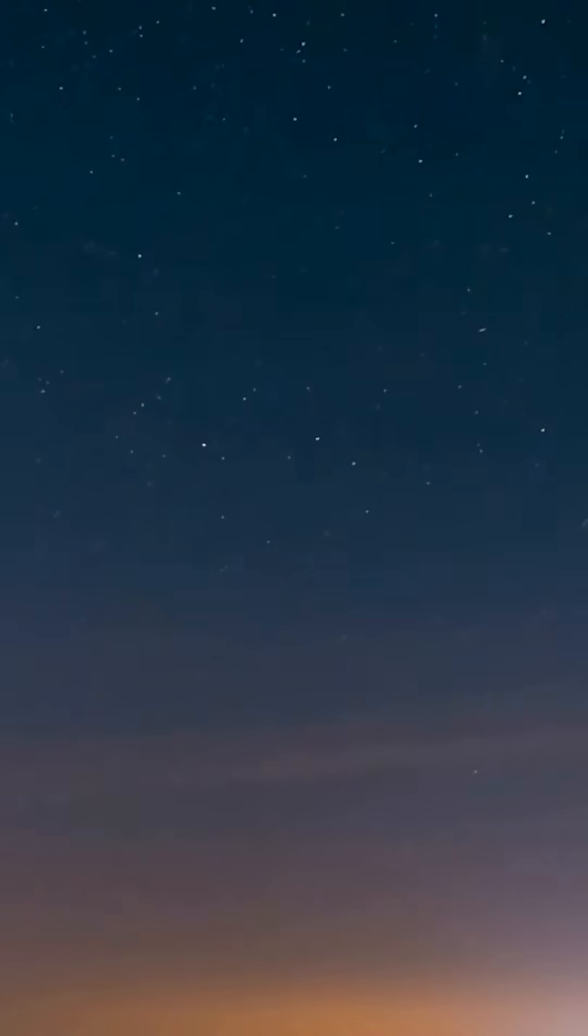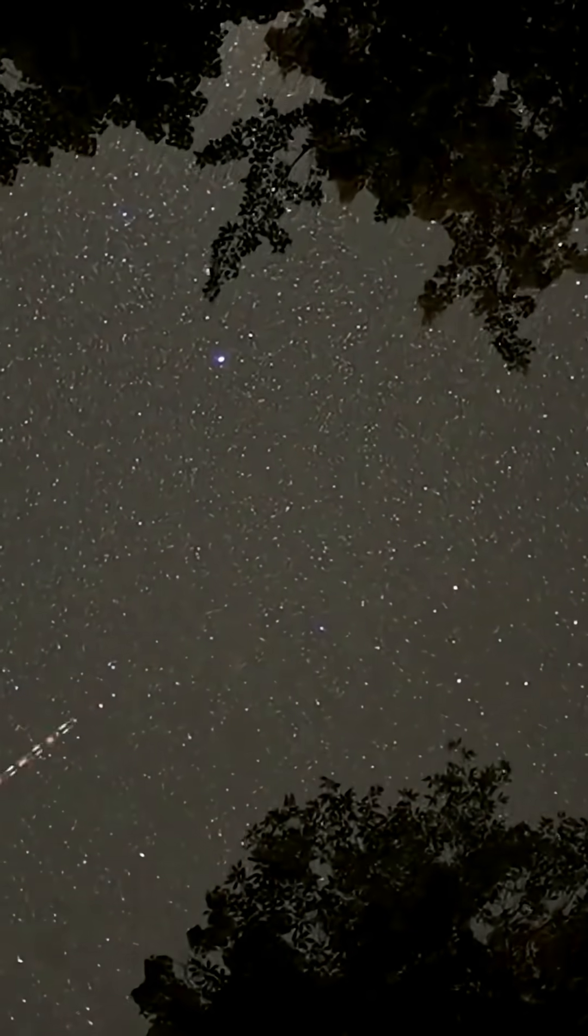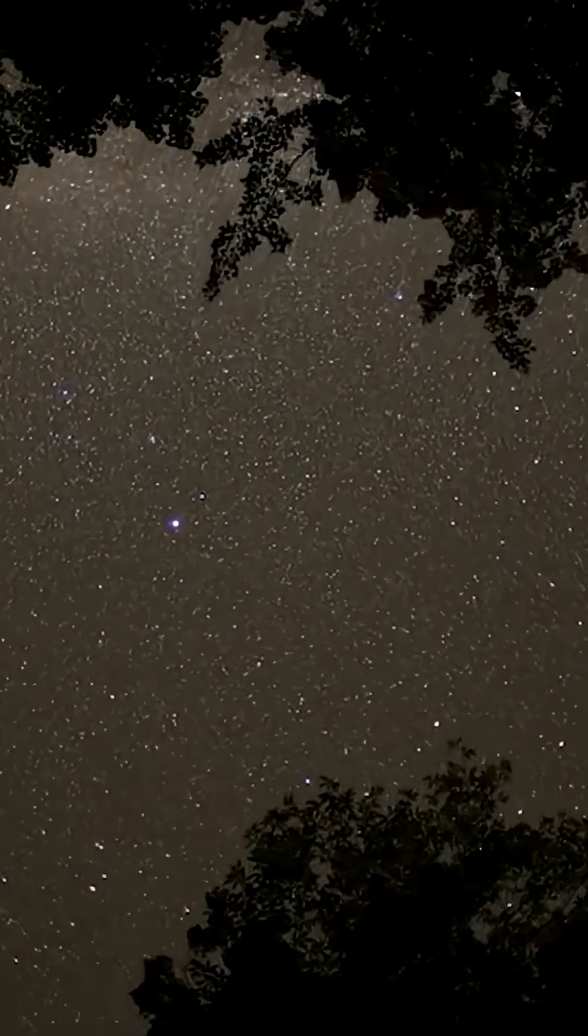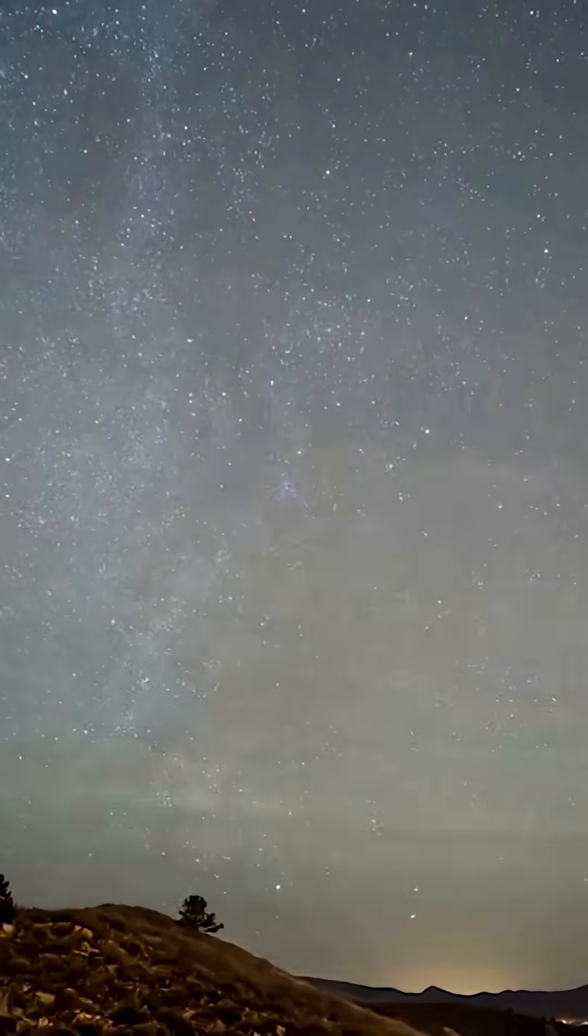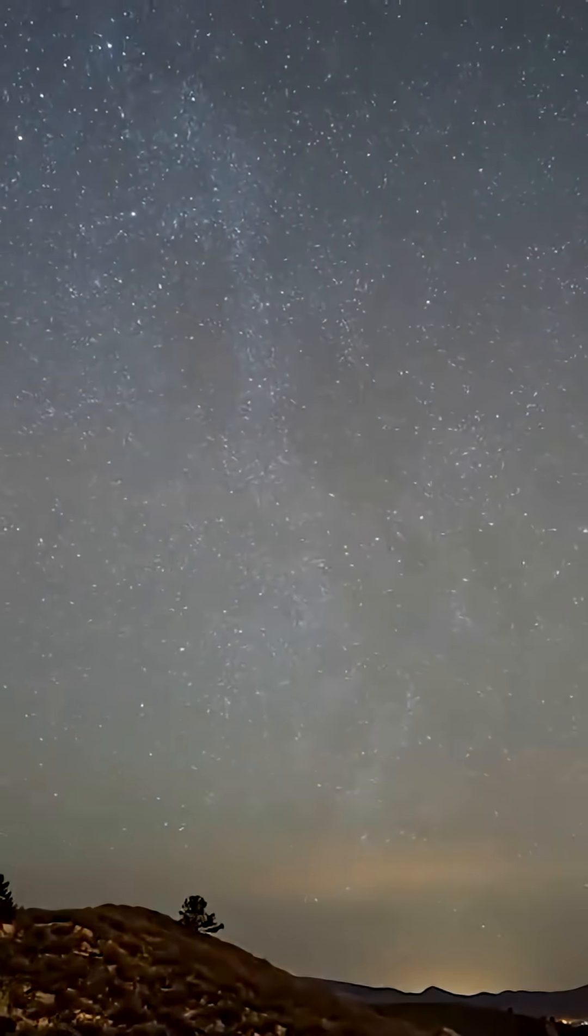Shooting stars and falling stars are actually meteors. They look like stars because they glow as they enter the Earth's atmosphere. Sometimes shooting stars or meteors appear one after the other and originate from the same direction. This phenomenon is known as a meteor shower.